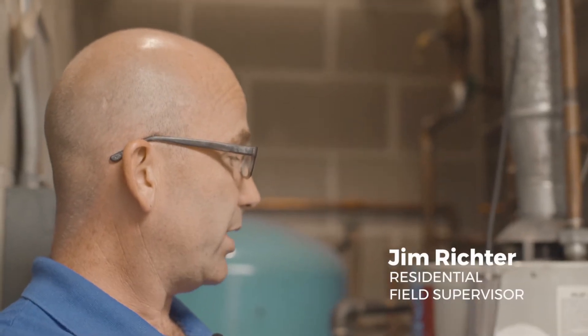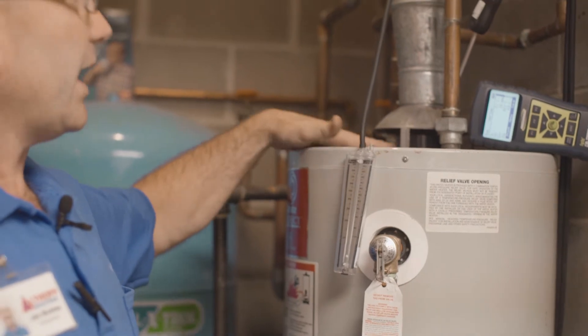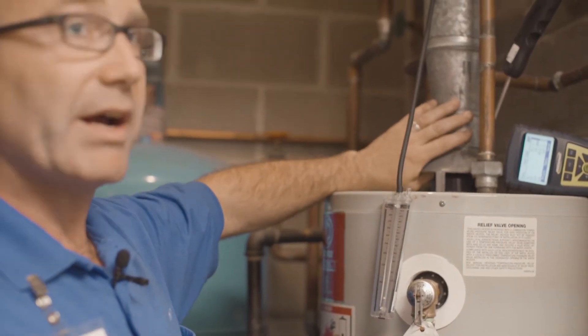This device is just a draft gauge and this bubble right here represents how much air is going up the flue pipe or the draft diverter.